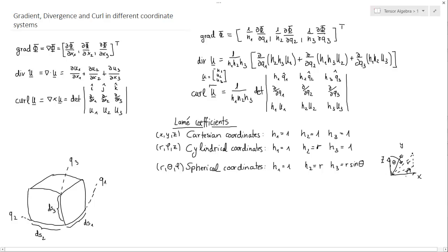To understand what theta and phi mean, consider a coordinate system with x, y, and z axes. A point P is described by a radial distance r from the origin, an angle phi in the xy-plane, and an angle theta between the line from the origin to the point and the z-axis. With these, you can plug in and calculate curls, divergences, and gradients.